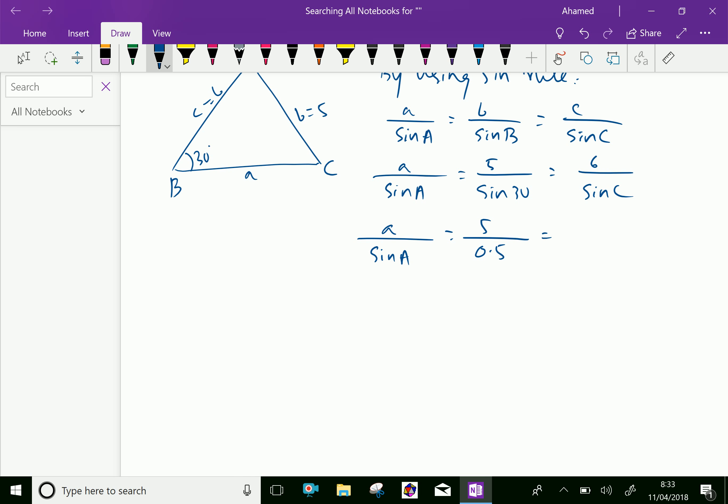Sine C equals 6 times sine 30, which is 0.5, divided by 5. So sine C equals 0.6.